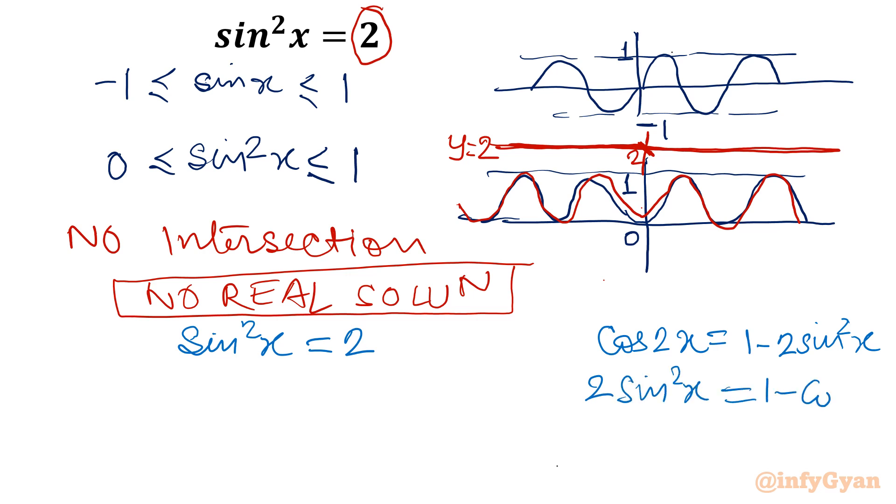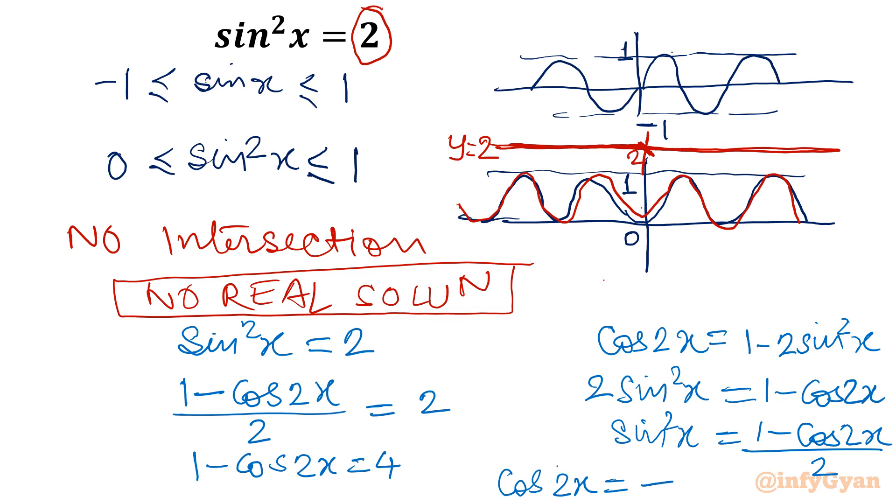So from here I will calculate sin square x. That would be 1 minus cos 2x. So sin square x will be equal to 1 minus cos 2x divided by 2. So let's put here 1 minus cos 2x divided by 2 equal to 2. That means 1 minus cos 2x equal to 4. Cos 2x equal to negative 3.